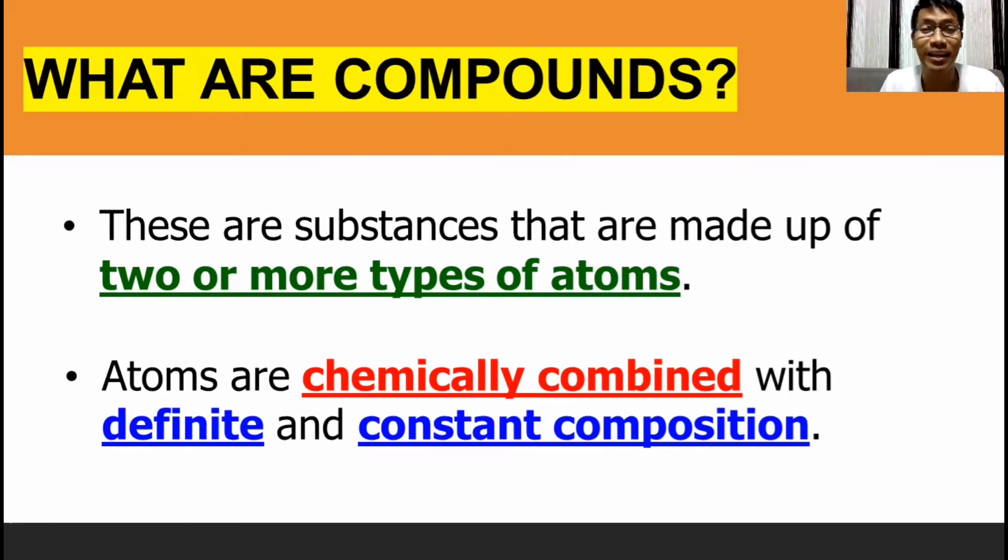Sir, ano pong ibig sabihin ng chemically combined? Ibig sabihin, nag-undergo sila ng chemical reaction para mabuo. So, hindi po pwedeng physical means lang or physical mixing lang. Para masabing compounds, ito dapat ay nagkaroon ng chemical reaction. So, with that, it is chemically combined together.